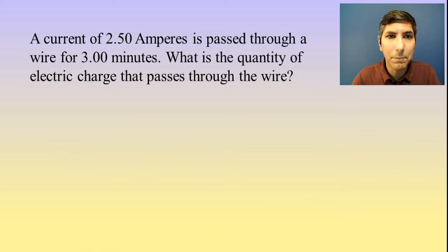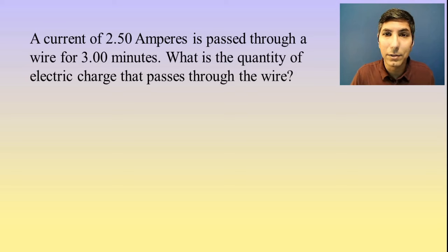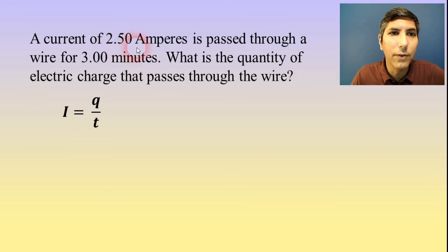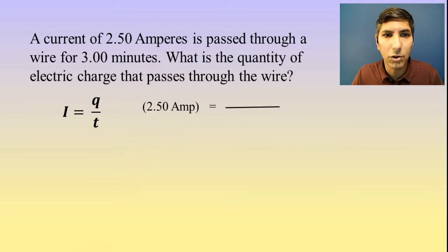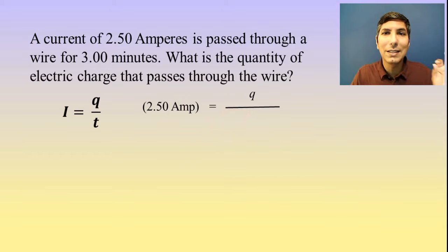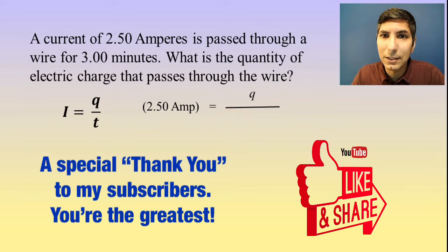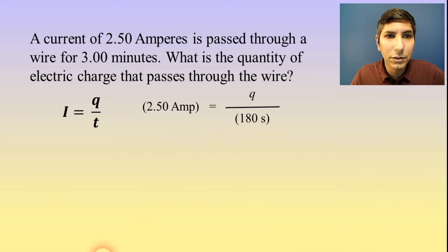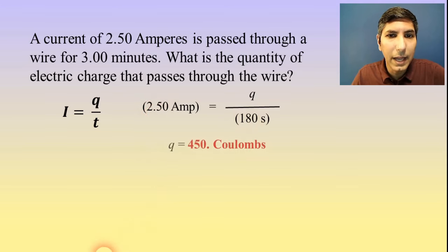Here's our first example: a current of 2.50 amperes is passed through a wire for three minutes. What is the quantity of electric charge that passes through the wire? We're going to use the equation I = Q/T. The current is 2.50 amps, so that gets plugged in for I. Q is what we're solving for, and T is the time. It says 3.00 minutes — but remember, time has to be in seconds, so we convert: 3 times 60 is 180 seconds. So we multiply 2.5 times 180 and we get 450 Coulombs.